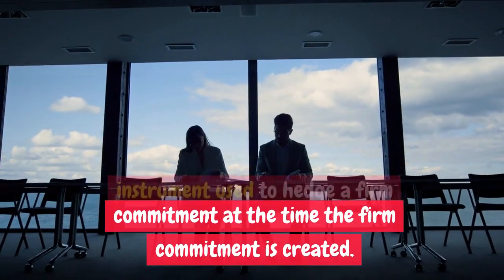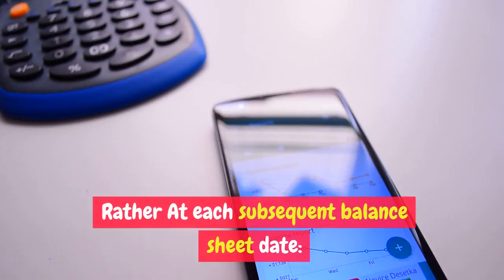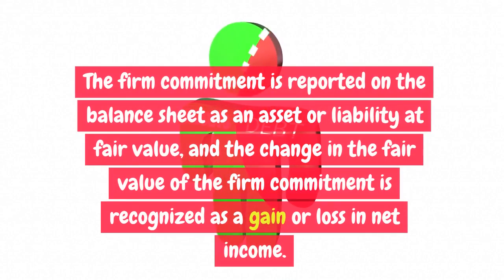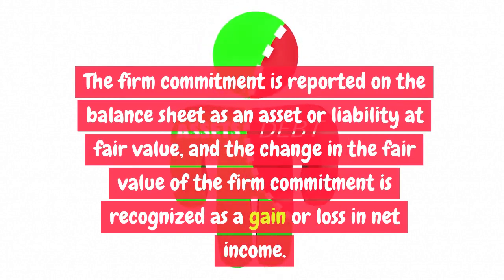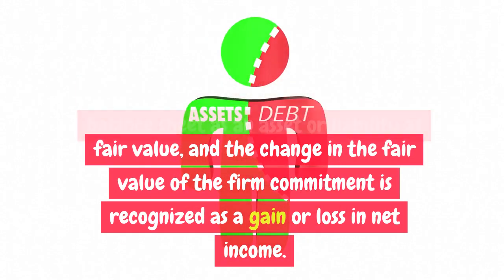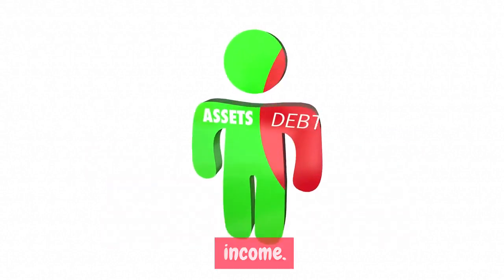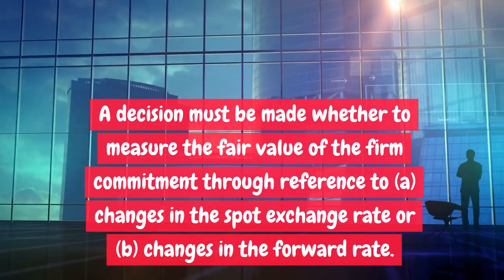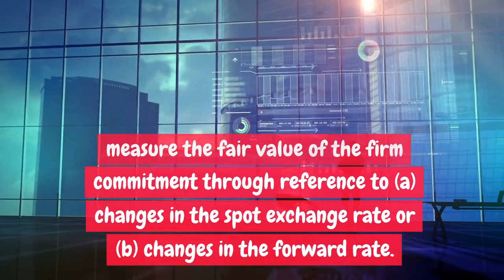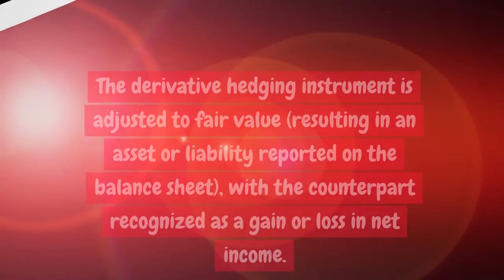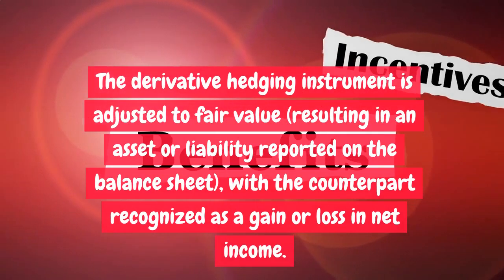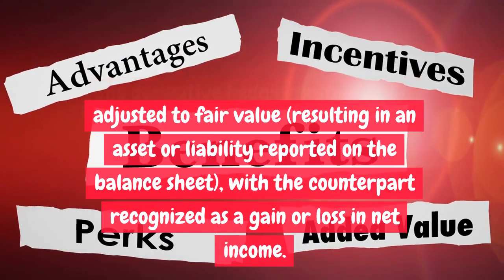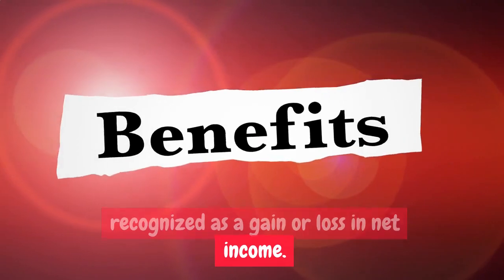There is no entry to record a firm commitment or the derivative instrument used to hedge a firm commitment at the time the firm commitment is created. Rather, at each subsequent balance sheet date, the firm commitment is reported on the balance sheet as an asset or liability at fair value, and the change in the fair value of the firm commitment is recognized as a gain or loss in net income. A decision must be made whether to measure the fair value of the firm commitment through reference to (a) changes in the spot exchange rate or (b) changes in the forward rate. The derivative hedging instrument is adjusted to fair value, with the counterpart recognized as a gain or loss in net income.